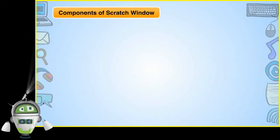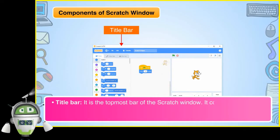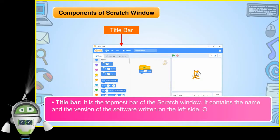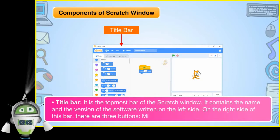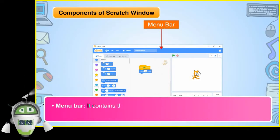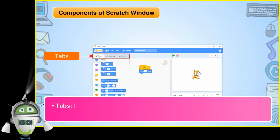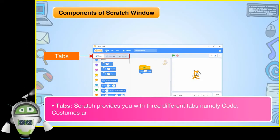Components of the Scratch window: The Title Bar is the topmost bar of the Scratch window. It contains the name and version of the software on the left side. On the right side there are three buttons — Minimize, Maximize and Close. The Menu Bar contains options like File, Edit, Tutorial and the name of the Scratch project. Scratch provides three different tabs — Code, Costumes and Sounds — and all three tabs perform different tasks.